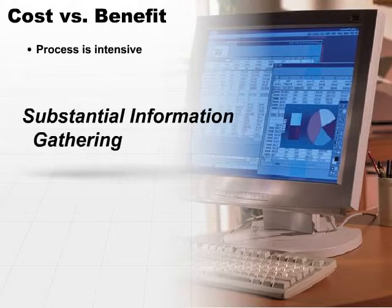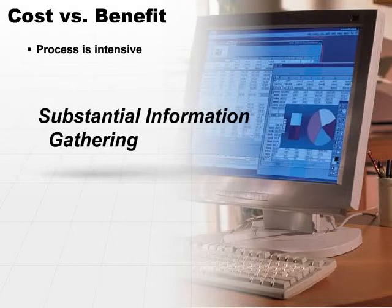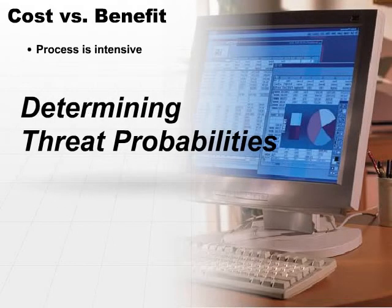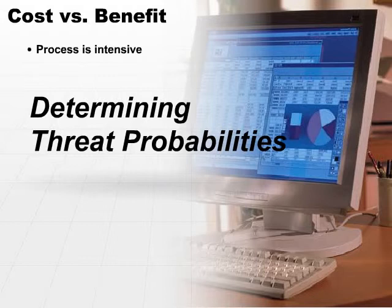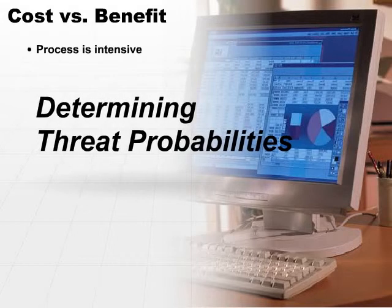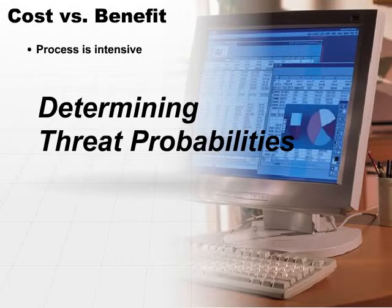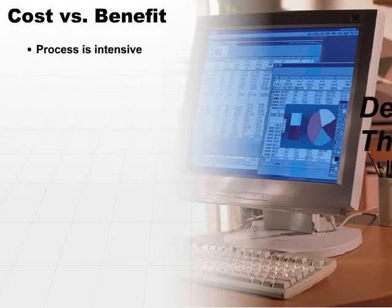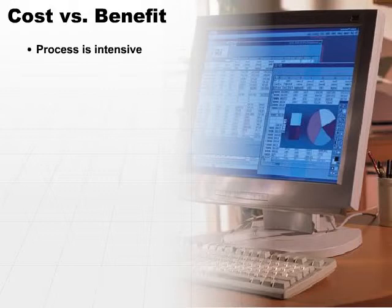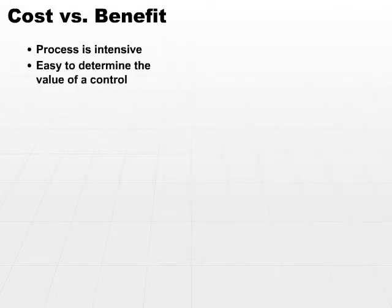The substantial information gathering is the first piece. Then, and this sometimes is the hardest part, determining threat probabilities — how often are we likely to incur a particular threat? Once you have all the information collected, once you know the value of all your assets, the probability that a threat will occur, and how much a threat is going to cost you, at that point it's a simple multiplication to determine the value of a control.